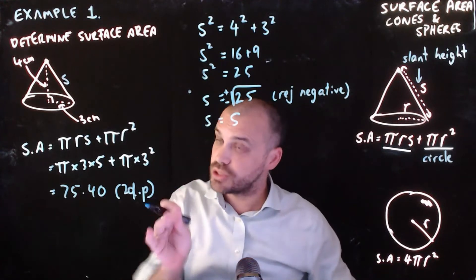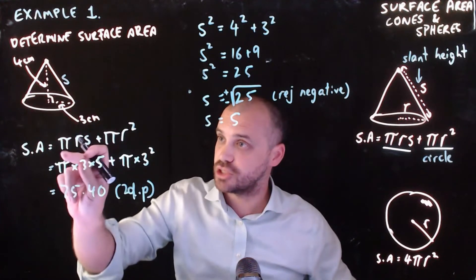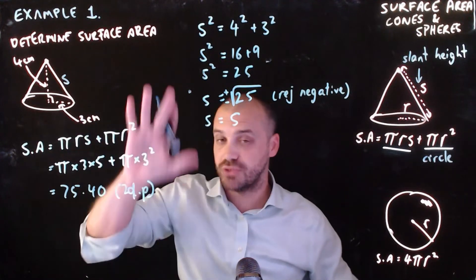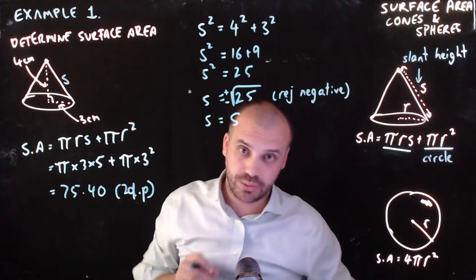Now of course, if the question was different, if it was just asking us for the curved section, we'd just be doing this. But this question asked us for the total surface area, so that's what we're doing.